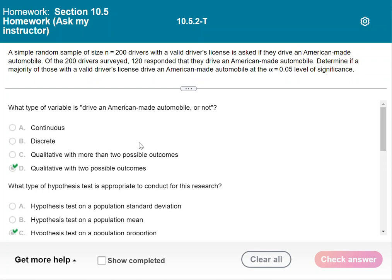So first of all, it asks about what kind of data we have here or what type of variable. It is qualitative and notice you've got two possible outcomes. Either you drive an American-made automobile or you don't. And so that's why it's qualitative with two possible outcomes.